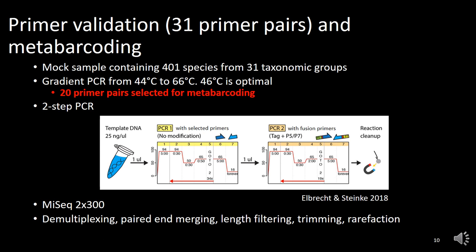After deciding on which primers work best and obtaining the PCR products, I basically performed a two-step PCR. For more details, you can refer to Albrecht and Steinke 2018. I pooled everything and sequenced using Illumina iSeq, and then proceeded with bioinformatics processing.